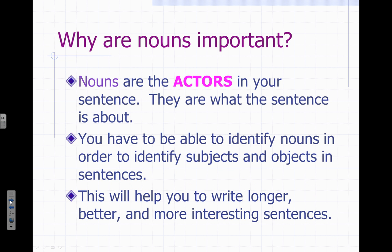Here's a big question: why are nouns important? In the next few lessons, we're going to be focusing on subjects, objects, different cases and tenses — and all of these aren't possible unless you have a strong and firm understanding of what a noun is. Here are the big three reasons. First, nouns are the actors or main players in your sentence — they are what the sentence is about. Second, in order to identify your subjects and objects, you have to be able to identify them as nouns first. And last, if you're able to identify your nouns and actors in sentences, you have the versatility to rearrange and revise so that you'll write longer, better, and more interesting sentences.